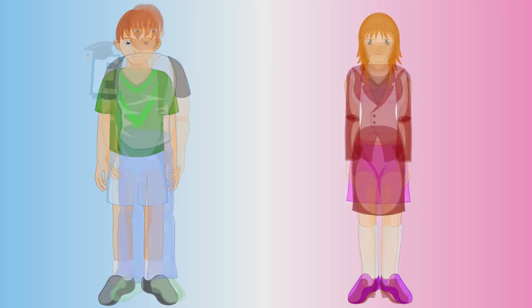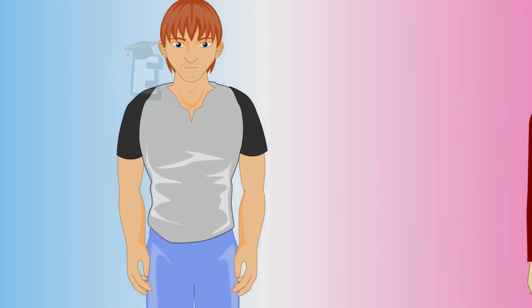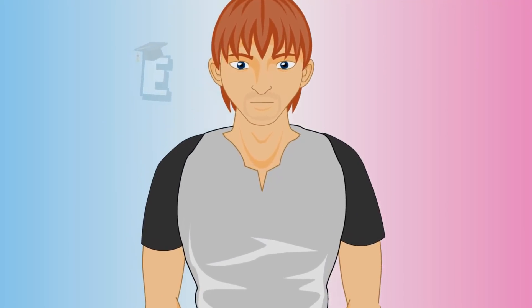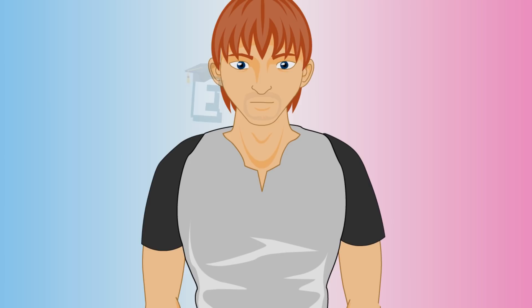During puberty, the human body experiences a lot of changes. The physical changes in a man are marked by a broadening chest, appearance of mustache, beard, and pubic hair around the sex organ, and appearance of Adam's apple.